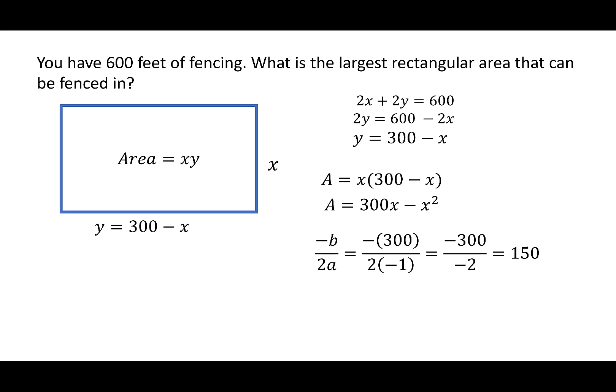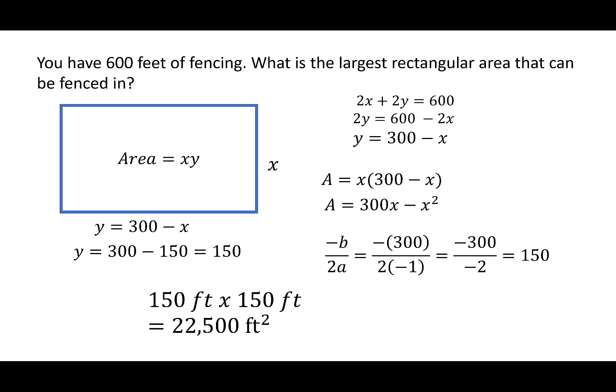Now that I know the value of x, to find the value of y, I just plug it back in to 300 - x. 300 - 150 gives me 150 again. My overall area is 150 × 150, which is 22,500 square feet.